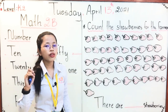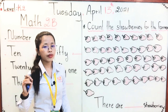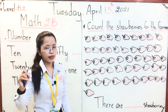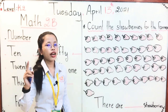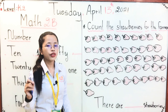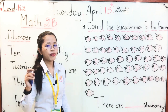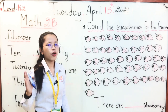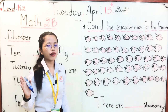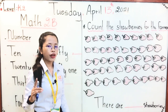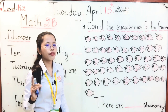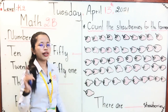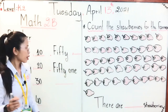Next we have F-O-R-T-Y, number 40. Notice that in number 40, we don't have the letter U. But in number 4, we have F-O-U-R. So in the word 'forty,' we don't have the letter U in the word.